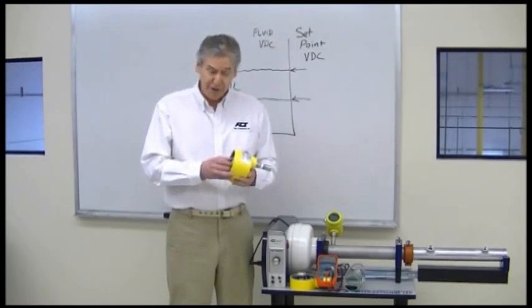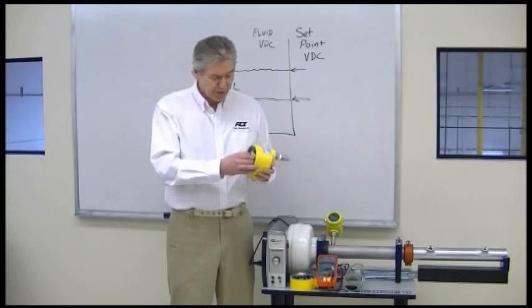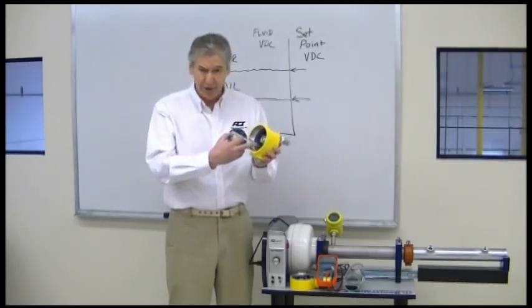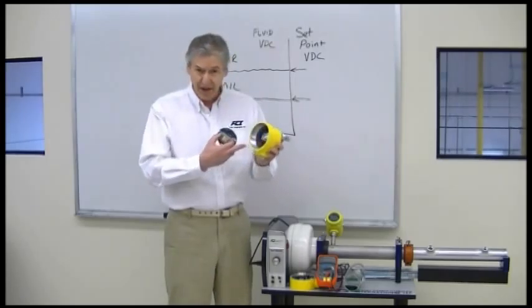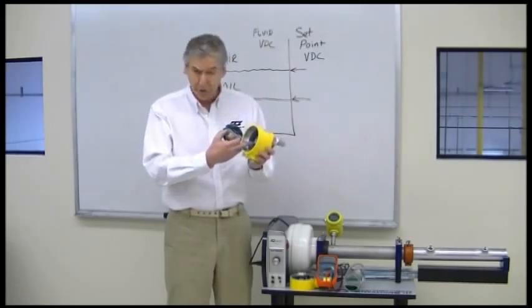To set up the switch, first of all, you want to make sure that you remove the circuit board to access the power connection. If it's an integral switch like this one, there will be a socket inside the enclosure for hooking your power to.